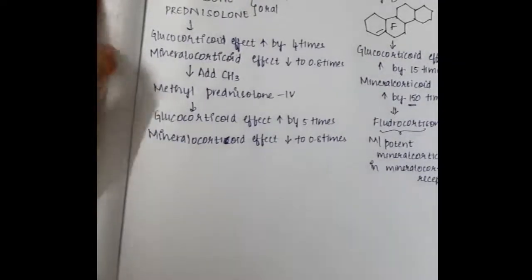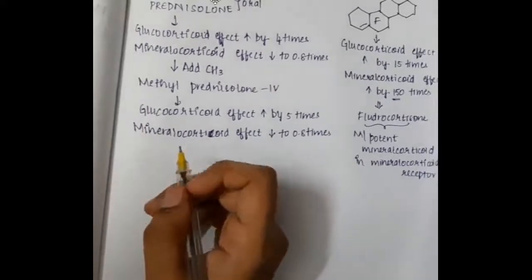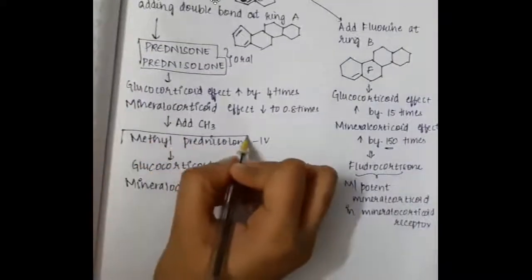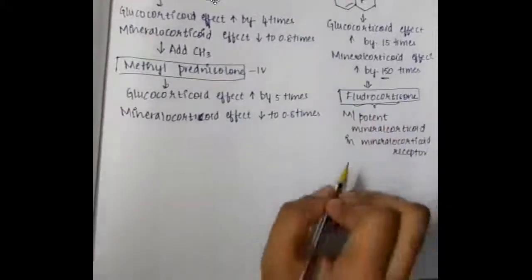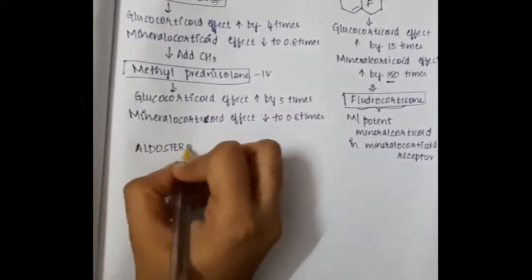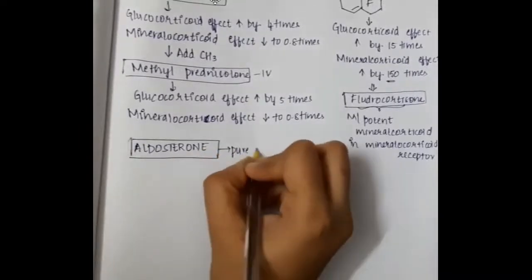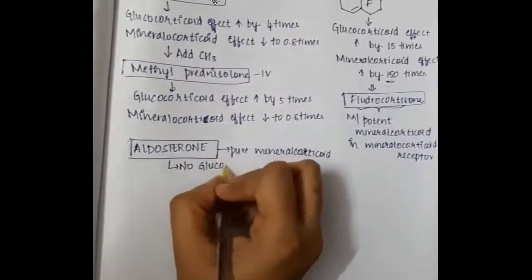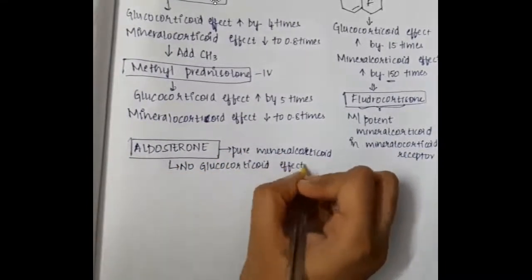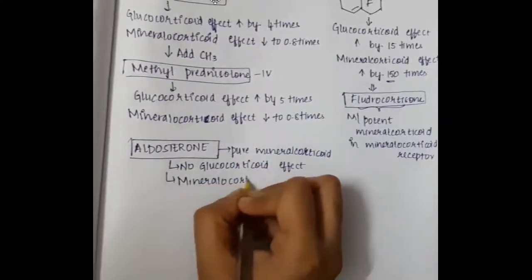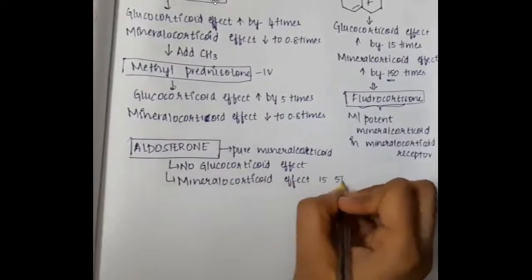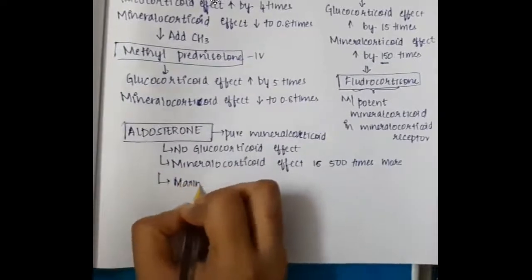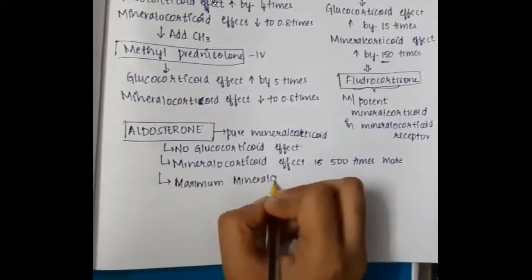Next we have aldosterone. Aldosterone is a pure mineralocorticoid without any glucocorticoid effect. Its mineralocorticoid effect is approximately 500 times more than hydrocortisone, and it has the maximum mineralocorticoid activity.